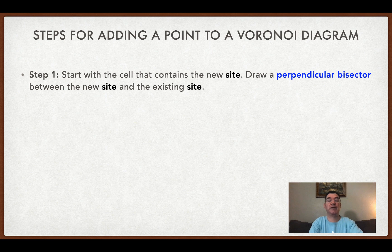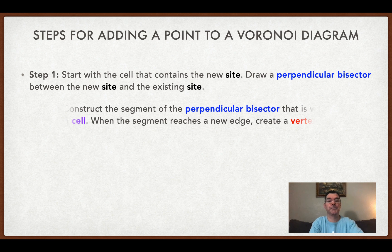Here are the steps that we're going to follow. We're going to look at the cell that contains the site that we have added to the existing Voronoi diagram, and we're going to draw a perpendicular bisector between the new site and the site that is already in that cell. We're going to construct that segment of the perpendicular bisector that is in the existing cell — we're not going to go beyond that cell. Eventually we're going to hit a new edge, and when we do, we're going to create a vertex.